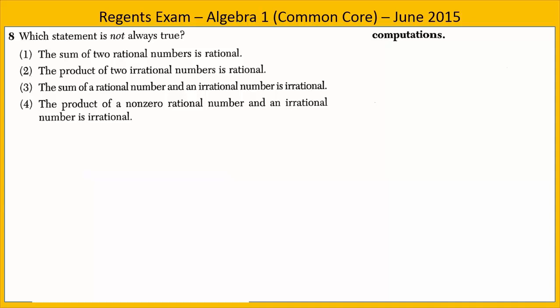In Exercise 8, we want to know which statement is not always true. If we think about what we know about rational and irrational numbers, we have probably determined that Choice 2 — the product of two irrational numbers is rational — is not always true. Sometimes it is, sometimes it's not.